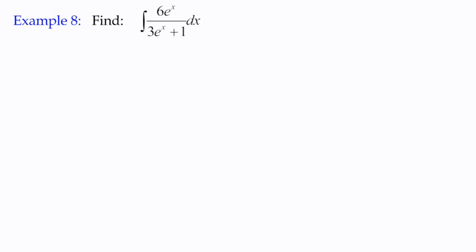Well, have you got this here? If we rewrite it, it might be more obvious. We've got the integral of 6e^x multiplied by, not divided by but multiplied by, (3e^x + 1) to the power negative one.